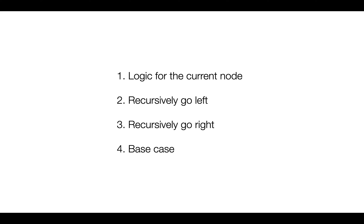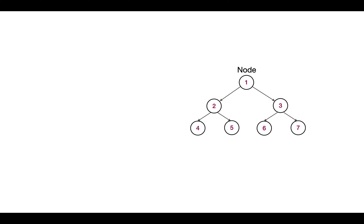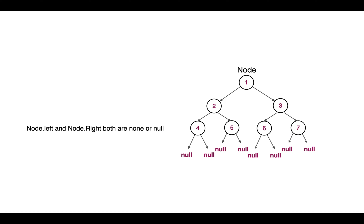We call the function recursively for the right node as well, and we write the base case. The base case almost every time is when we reach the leaf node, because after that we have no more nodes or values in the tree — node.left and node.right are both null or none.